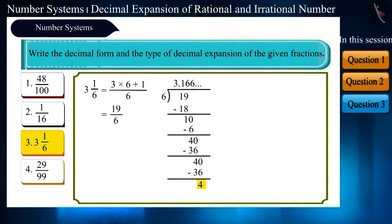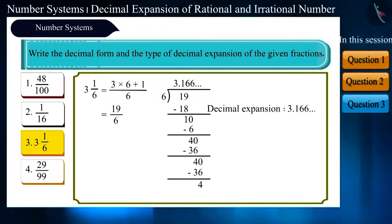On solving this, we do not get the remainder as 0 and after two steps, 6 is getting repeated. Hence, we get the decimal expansion as 3.16666. Therefore, this expansion is non-terminating, recurring.